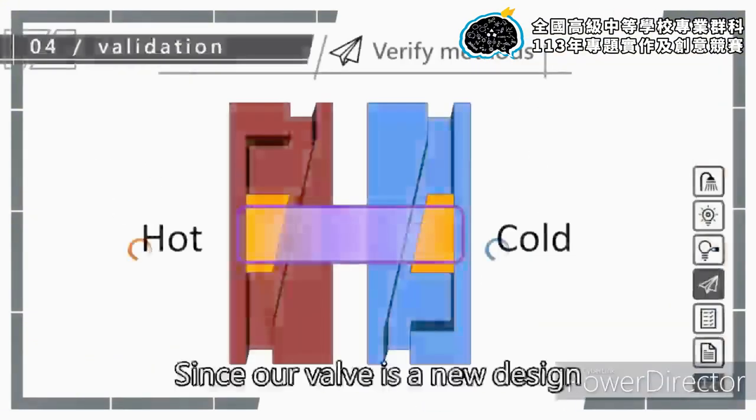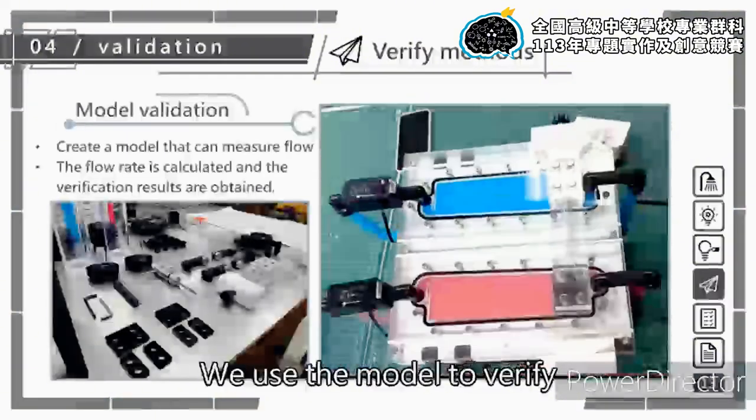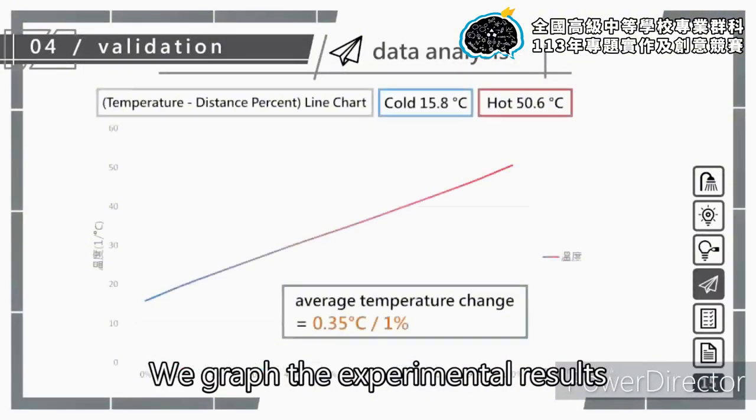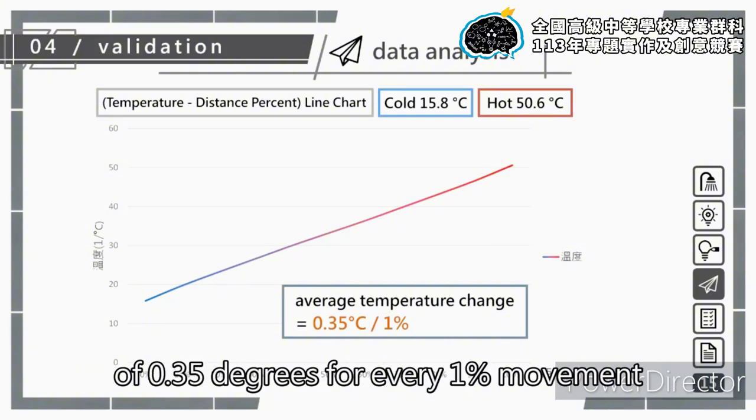Now I'll explain the validation. Since our valve is a new design, we needed to verify its feasibility. We used a model to verify. We graphed the experimental results and calculated an average temperature change of 0.35 degrees for every one percent movement.